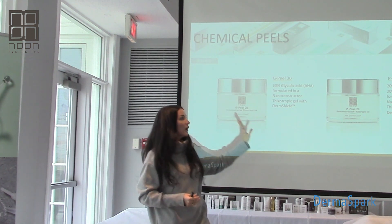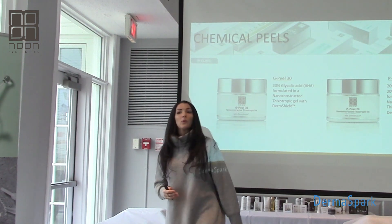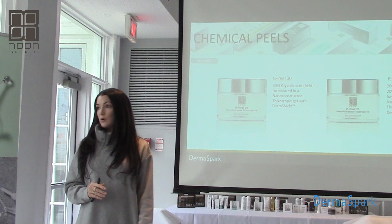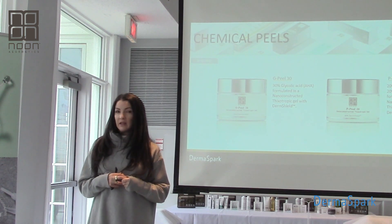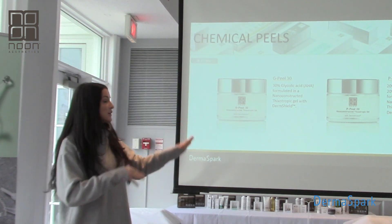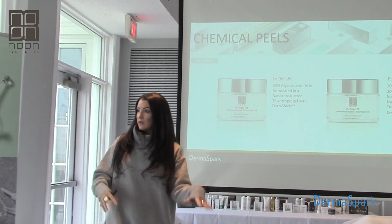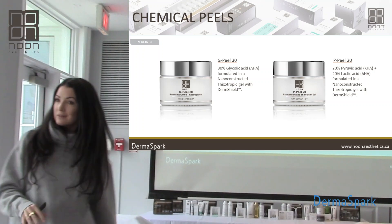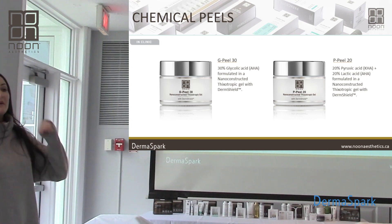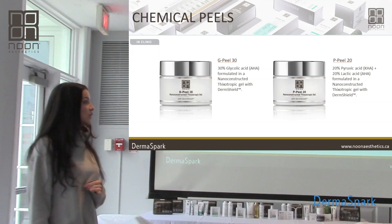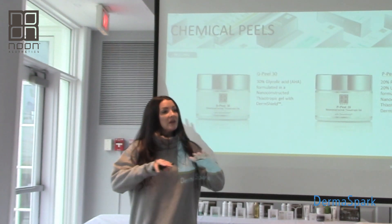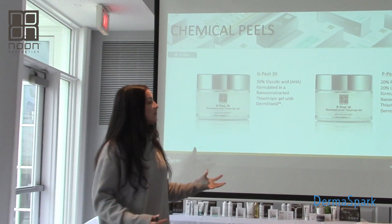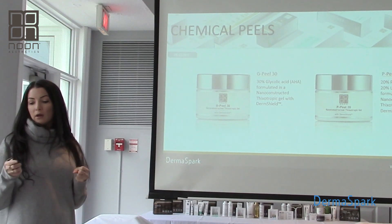I might start somebody on the G peel and then graduate them to the P peel. I love the P peel for more advanced hyperpigmentation, intensified melasma, acne scarring, and deeper fine lines and age management. It's also my favorite to alternate — if a patient is doing RF microneedling, once their skin is healed I'll have them come in for a P peel. It's nano-constructed as well, so you get rapid product penetration and that nice thick thixotropic gel for even distribution. Both peels contain the DermShield.